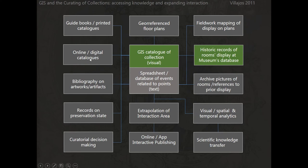Within this workflow, after taking a look at the biography of artworks accessible through online and digital catalogs, and also printed catalogs, the historic records of room display and museum databases are also useful and susceptible to be included. We can go to the archive of the museum and see how all the displays have changed over time and represent them within the same environment.